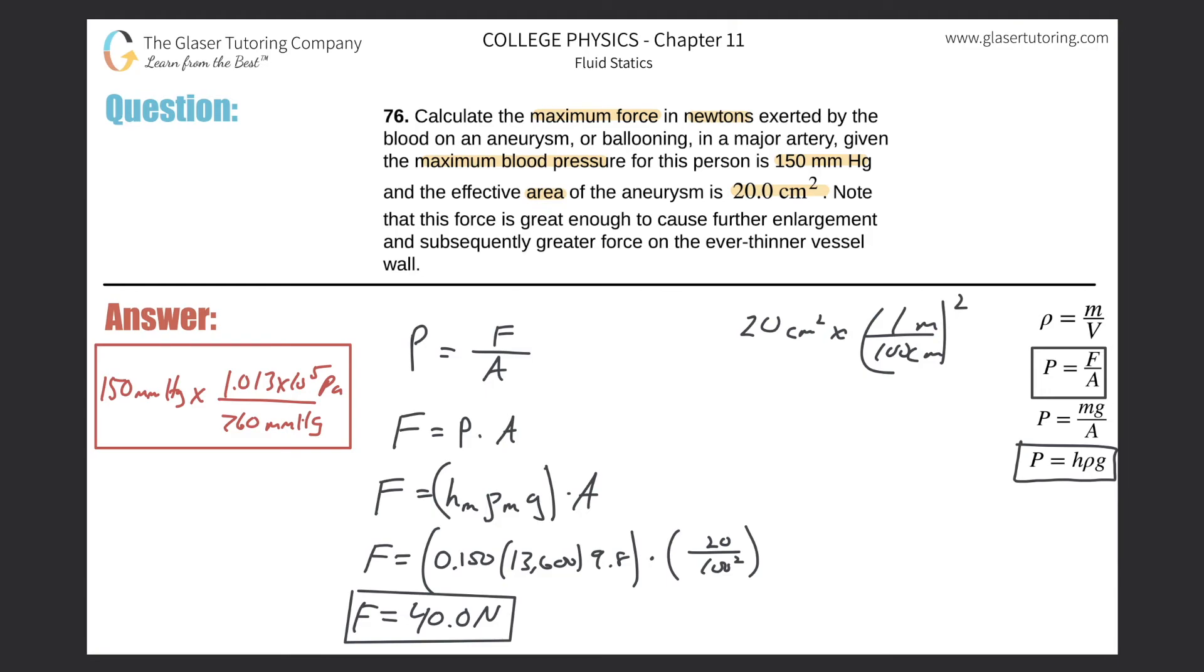Now humor me here, calculate this pressure we found by using these numbers: 0.15 times 13,600 times 9.8. Look at how close they are! Why do they differ slightly? Well, because I'm approximating the pascal up here - this is the approximate density of mercury.